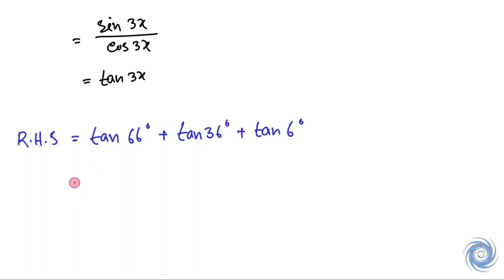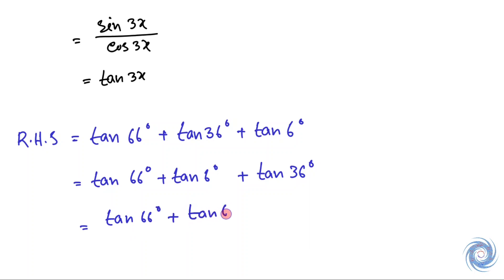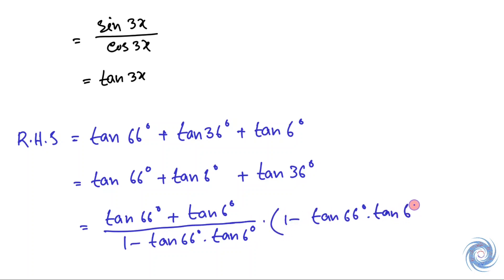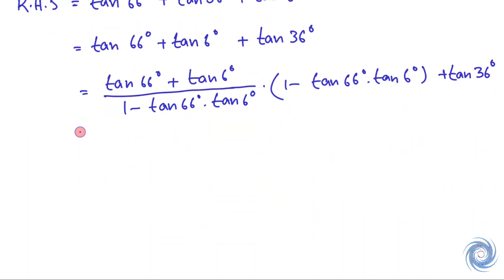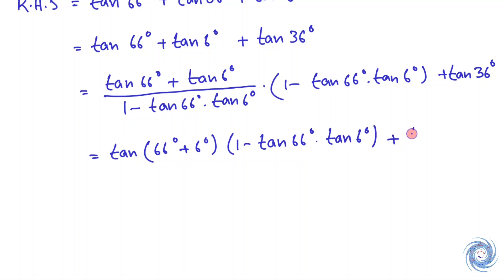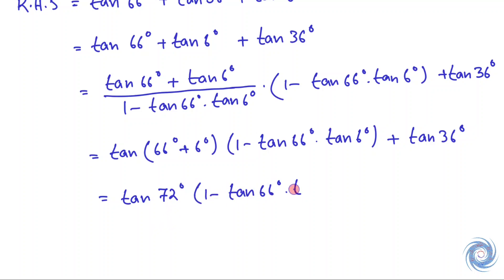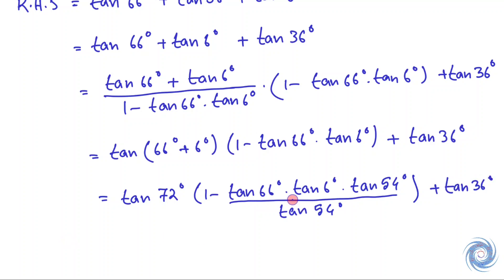And from here we have the expression for the right hand side. And this gives us the next step. And from here we have the simplified form, and this implies the following. Now we can use the result that tan(π/3 + x) times tan(π/3 − x) times tan x equals tan 3x, where x is equal to 6 degrees. So from here we have the substituted result.